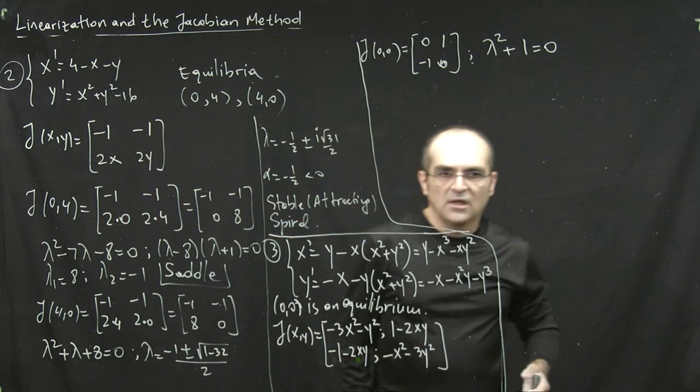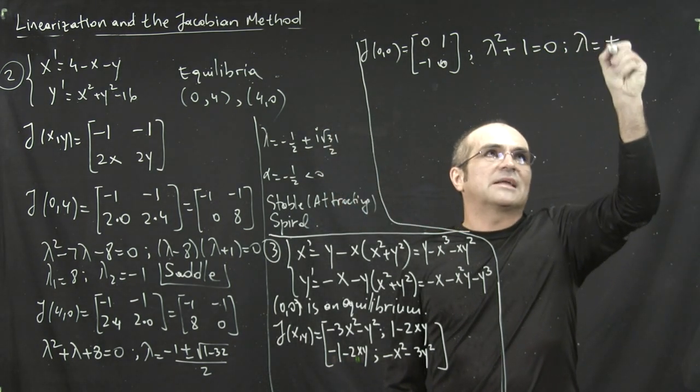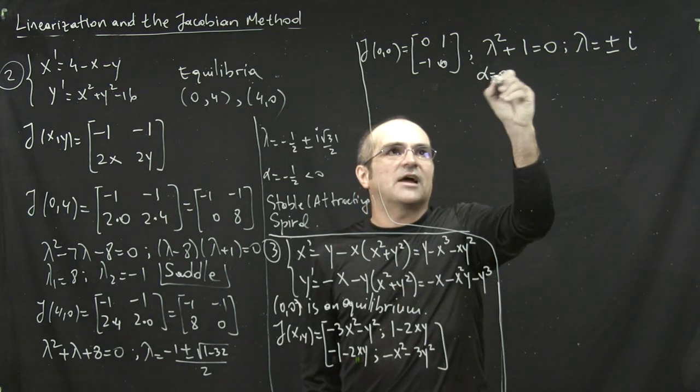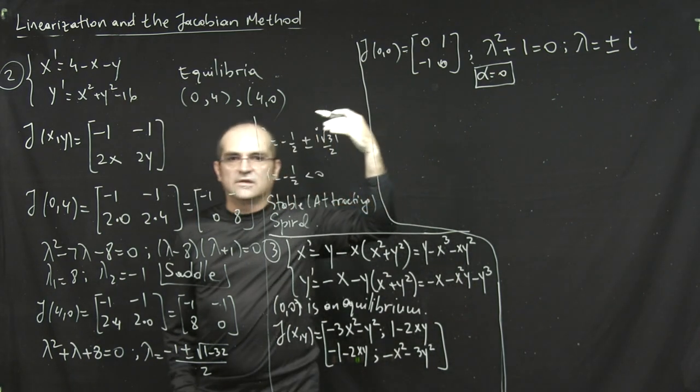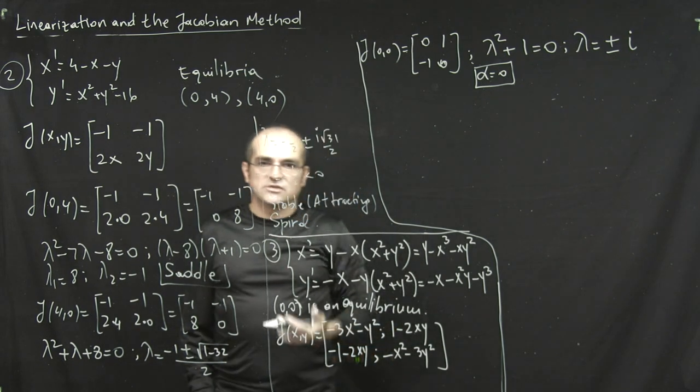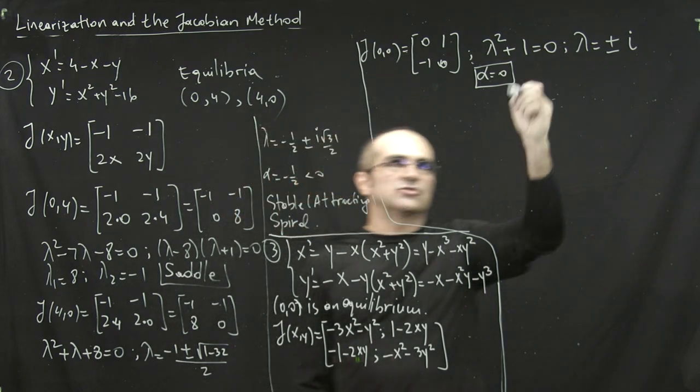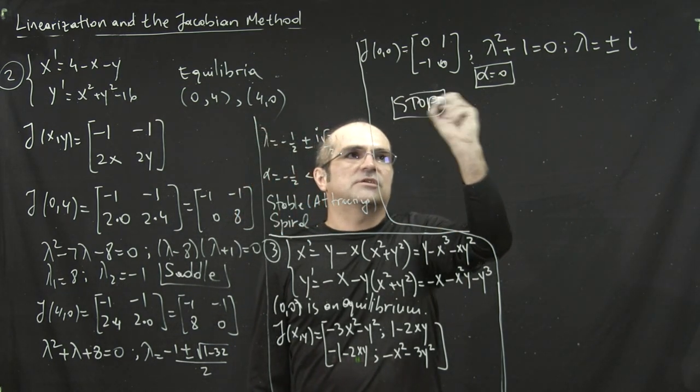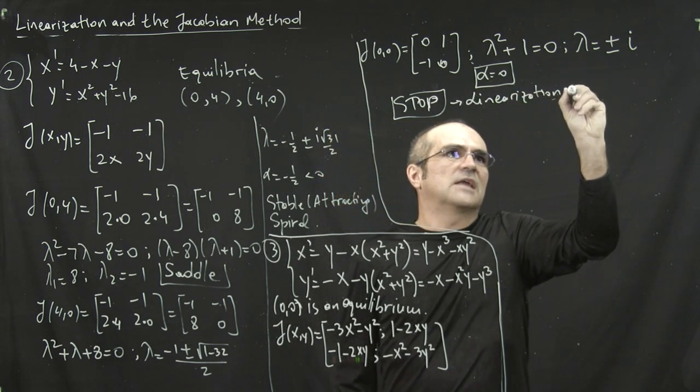When the linearization doesn't work. Why doesn't work? Well, what is lambda? If you solve for lambda, that's plus minus i. It's a complex eigenvalue. But a complex eigenvalue with zero real part. So you shouldn't have... If lambda is real, you shouldn't have a zero real eigenvalue. If it's complex, you shouldn't have zero real part. So in the exam, if you have an example like this, you should stop. And just mention that linearization is not applicable.